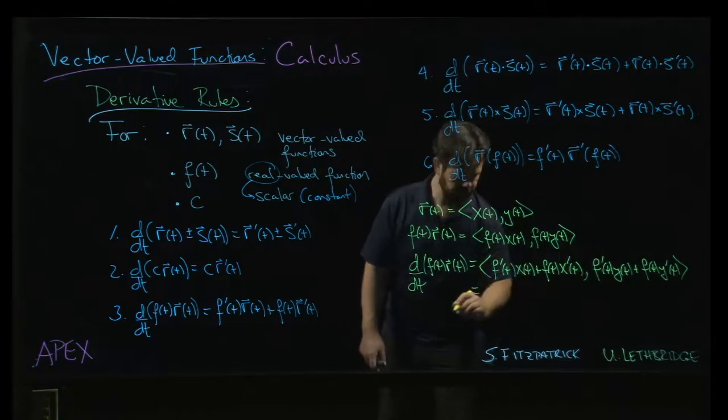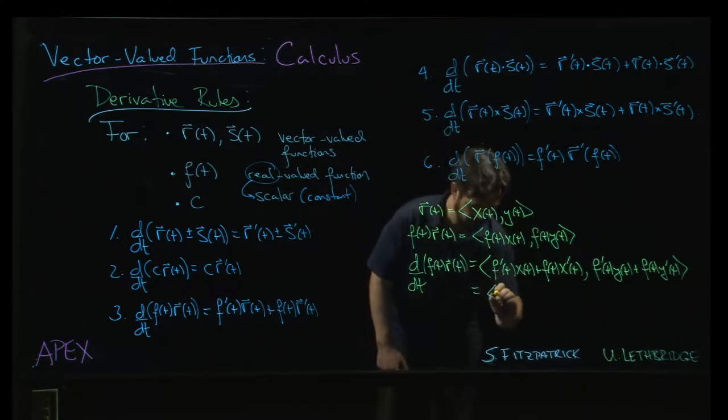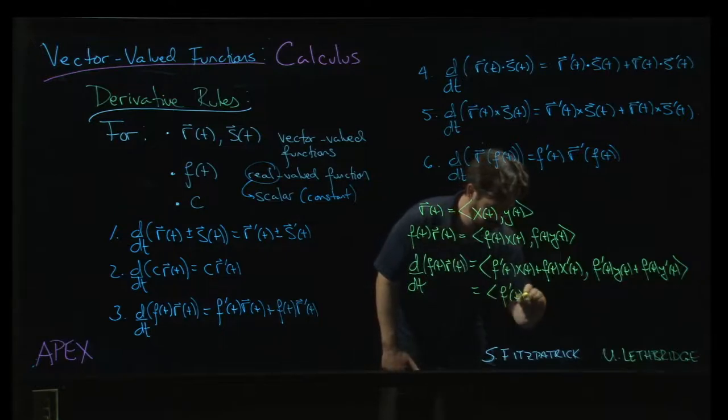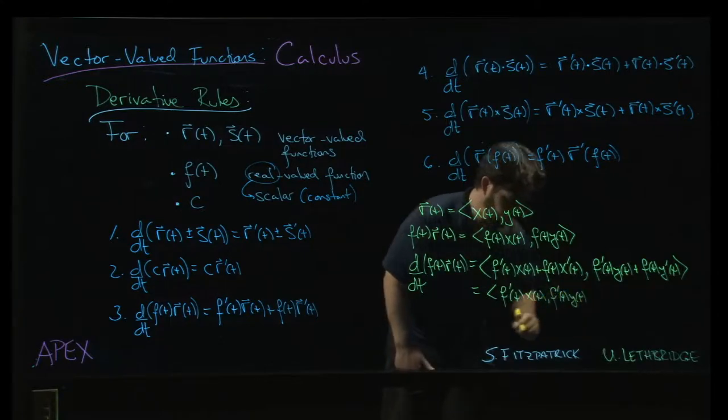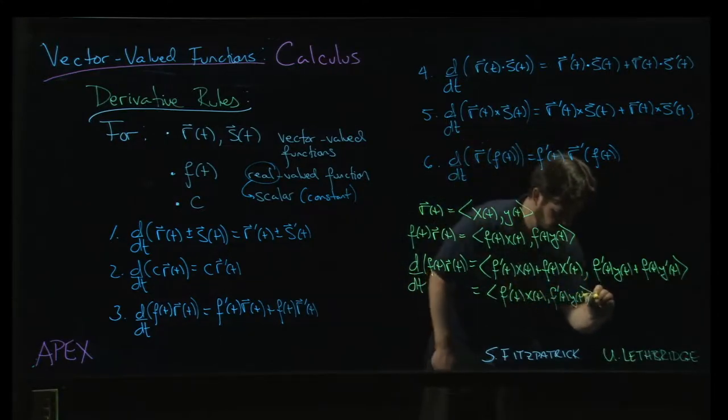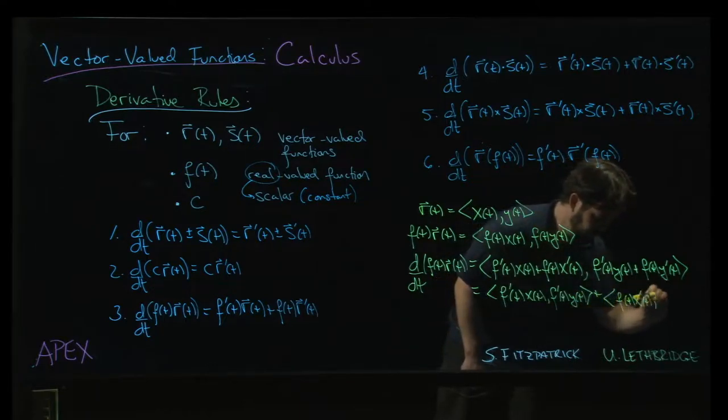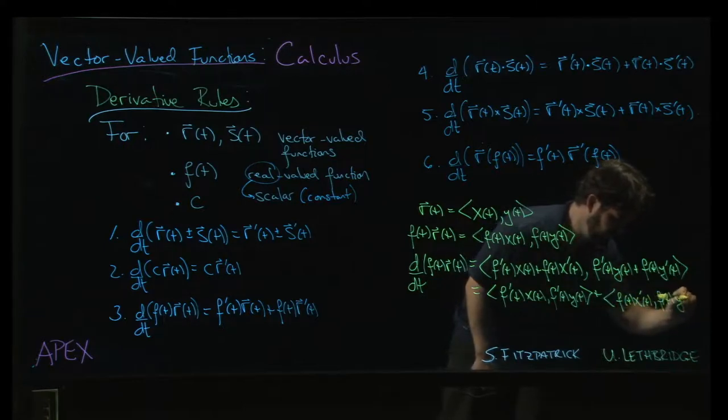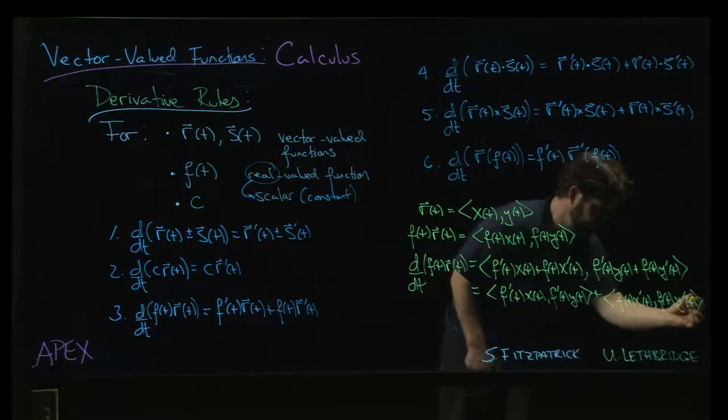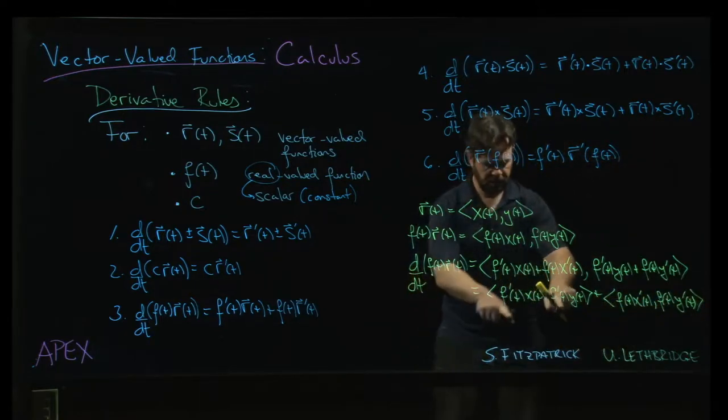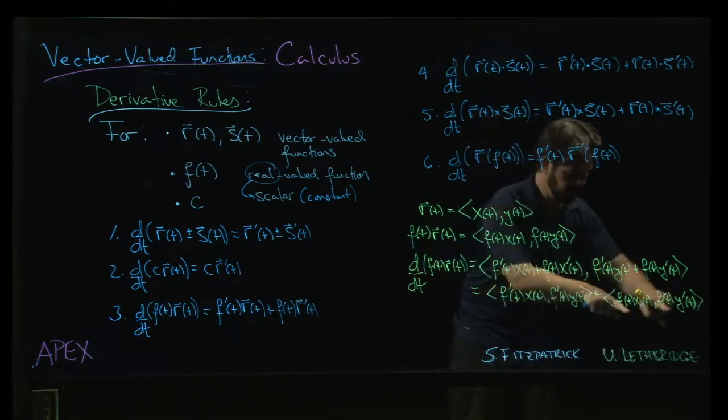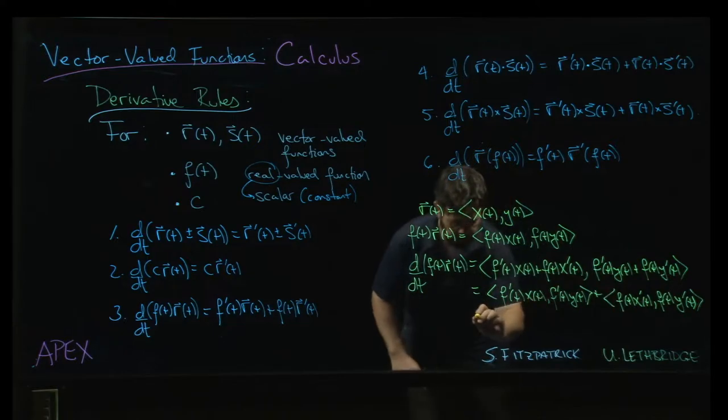And we split this up into a sum of two vectors. We're going to do this, f prime of t, x of t, and then f prime of t, y of t, added to f of t, x prime of t, f of t, y prime of t. And now notice that f prime is a constant scalar multiple here. f of t is a constant scalar multiple there. And so you can factor those out.